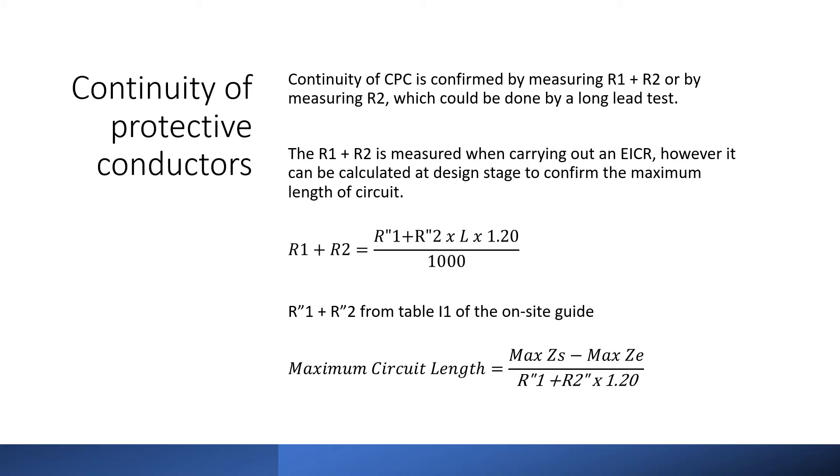So we can see the formula for calculating the length of the circuit for resistance here at the bottom of the screen. So we take the maximum Zs from table 41 and we subtract the maximum Ze and then we divide by the tabulated values for R1 plus R2 which can be found in the on-site guide and then we multiply by 1.2 and that will give us the maximum circuit length to comply with the disconnection time.